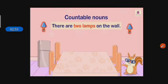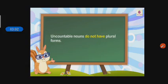There are two lamps on the wall. You can see how many lamps — one and two, so there are two lamps on the wall. Now, uncountable nouns do not have plural forms, because you can't count uncountable nouns with numbers.